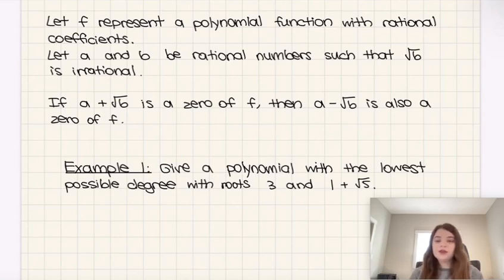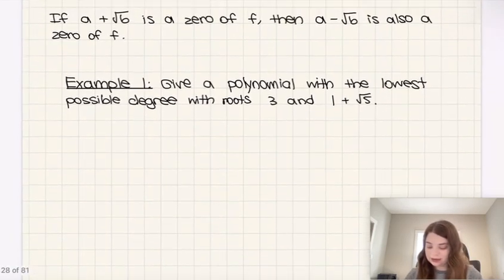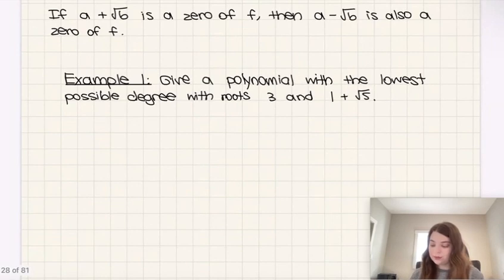So how can we use this information to answer one of our classic Algebra 2 questions? Example 1: Give a polynomial with the lowest possible degree with roots 3 and 1 plus root 5.